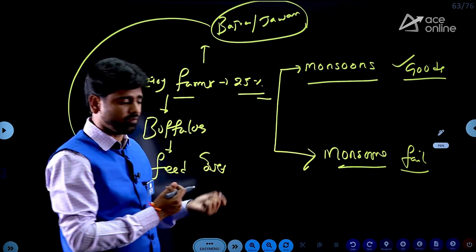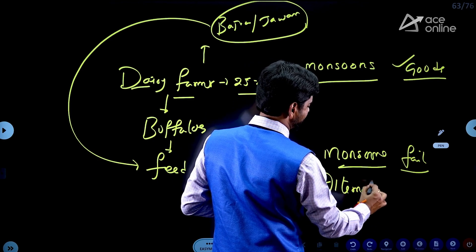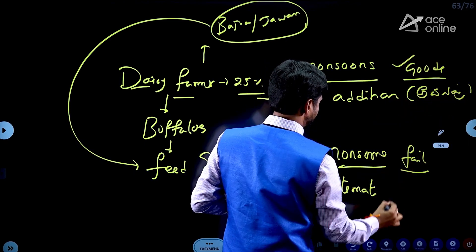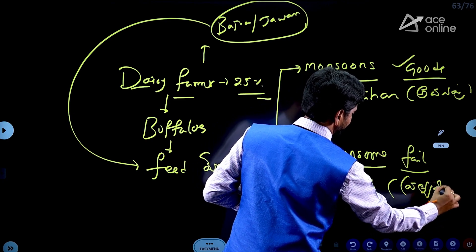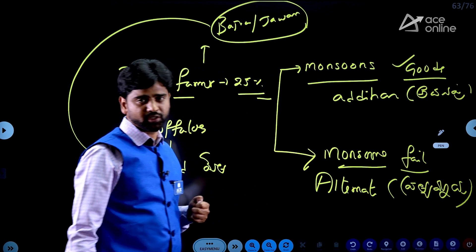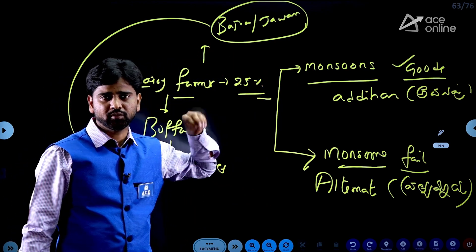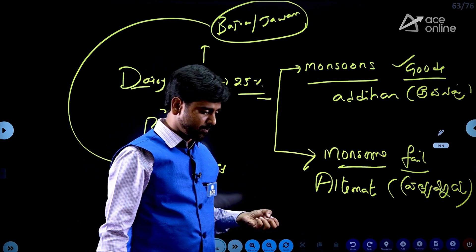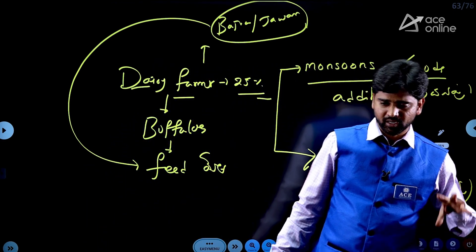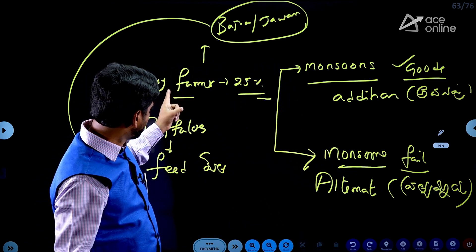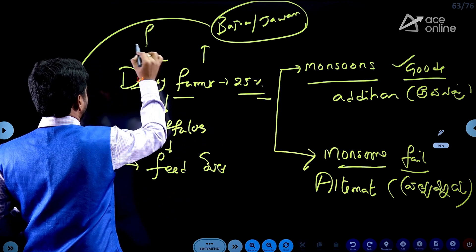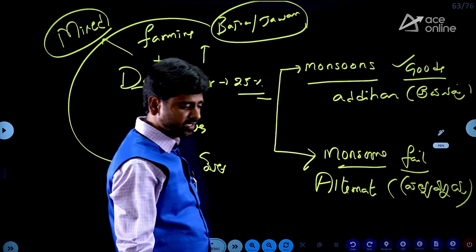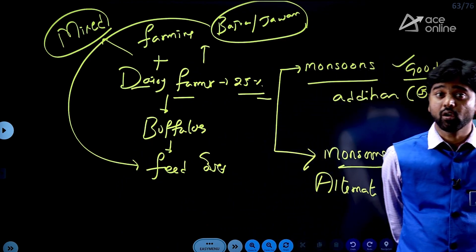Dairy farming serves as an alternative income source. It leads to subsistence farming combined with dairy farming — what is called mixed farming or mixed cropping. This is generalized in semi-arid regions.